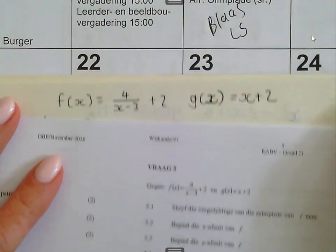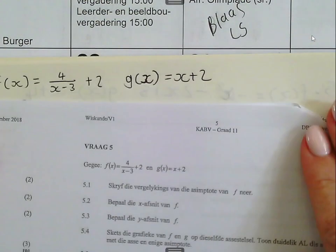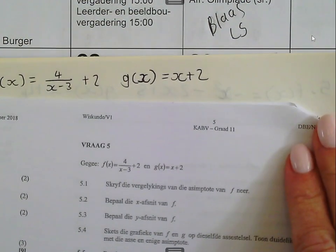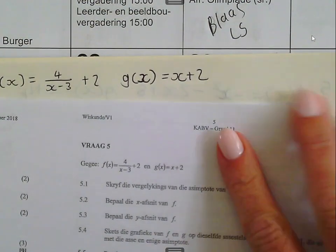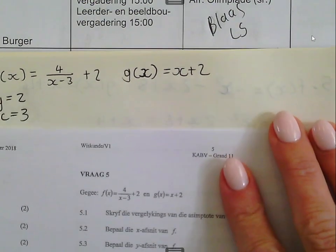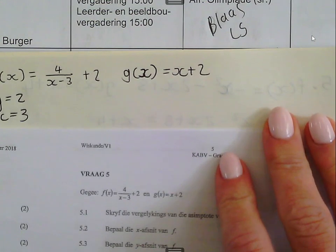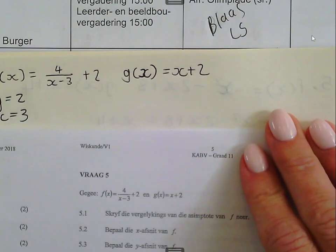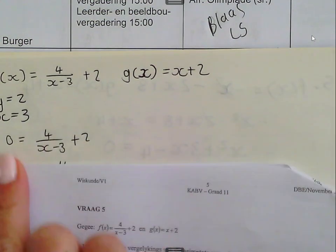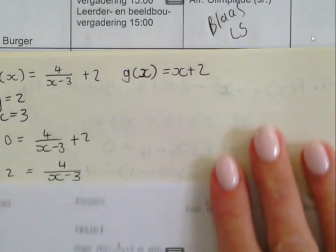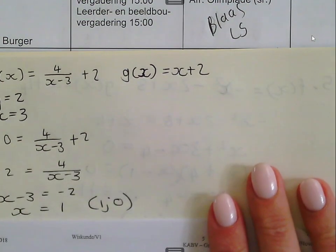The first one, they gave you these two equations and asked you to write down the equations of the asymptotes of f, so it's y equal to 2 and x equal to 3. The x-intercept of f, you make y zero, then you solve it, you find x to be equal to 1.